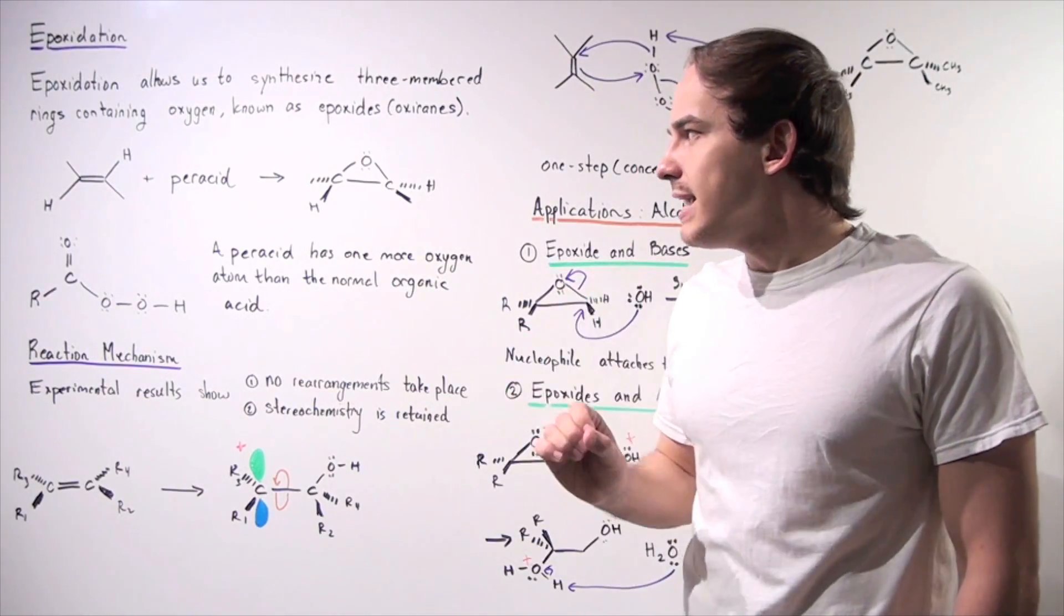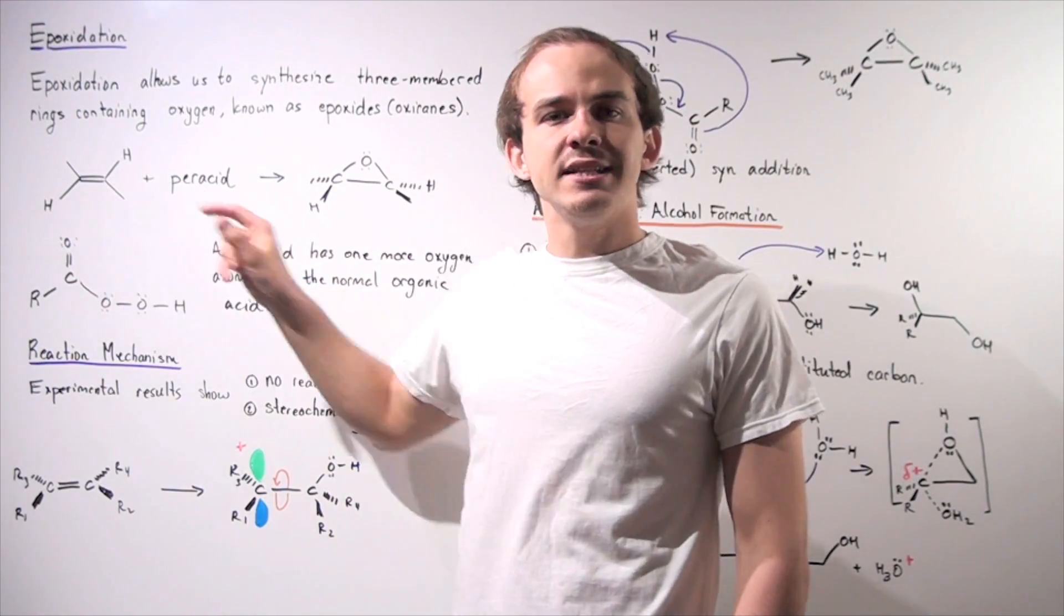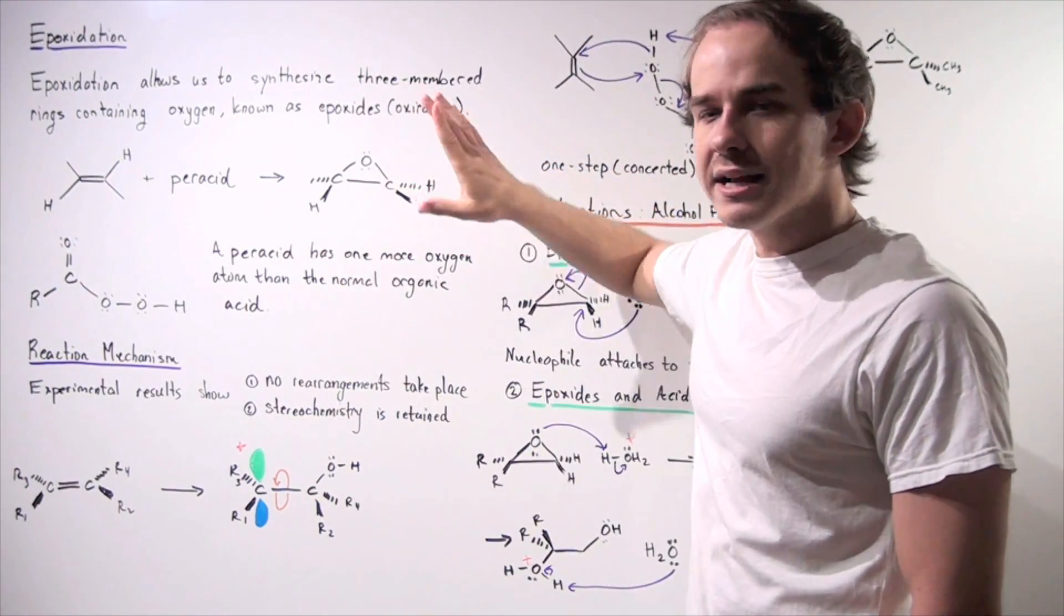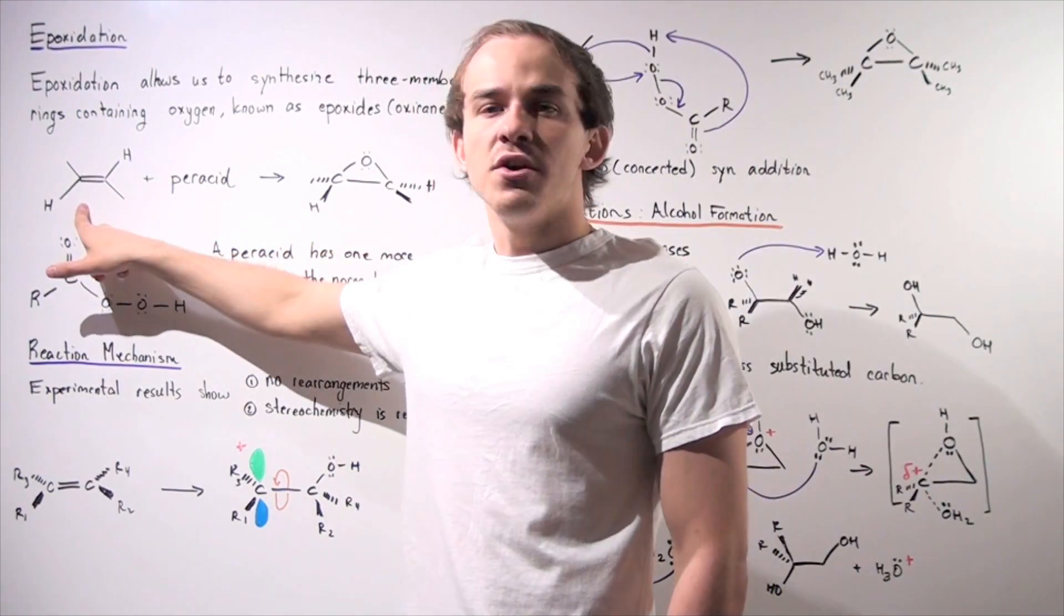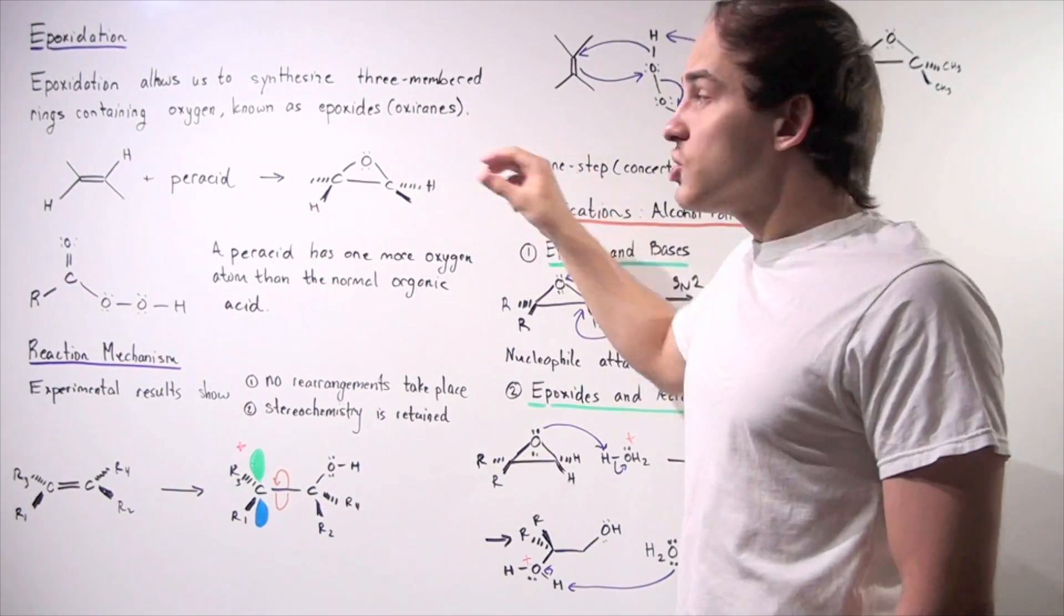That basically means that if we begin with a trans-alkene, we must end up with a trans-epoxide. Likewise, if we begin with a cis-alkene, we must end up with a cis-epoxide.